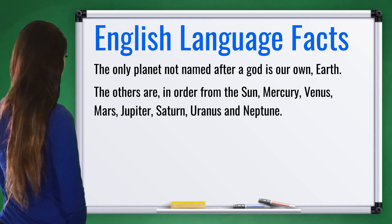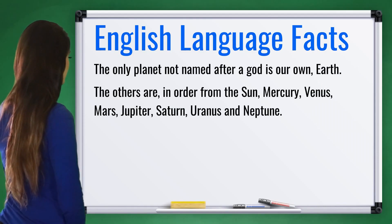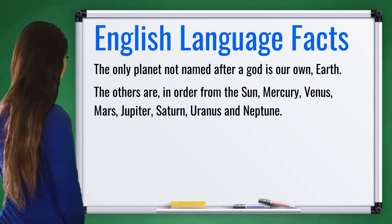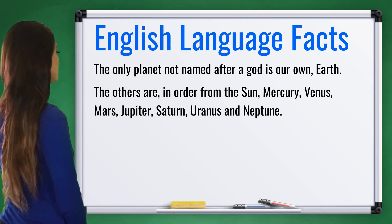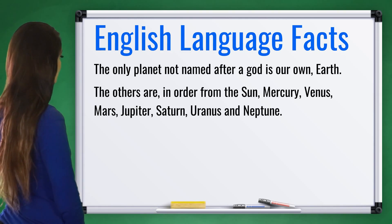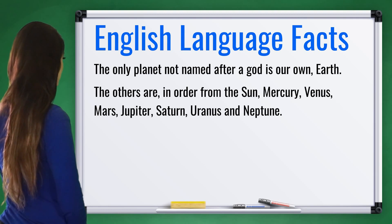Now let's learn an interesting fact about the English language. The only planet not named after a god is our own, Earth. The others are, in order from the Sun: Mercury, Venus, Mars, Jupiter, Saturn, Uranus, and Neptune.